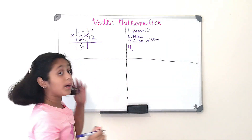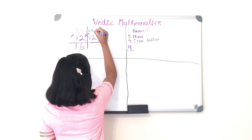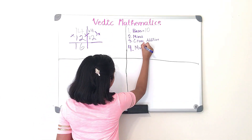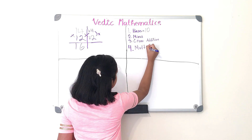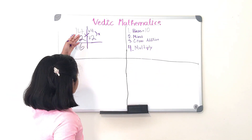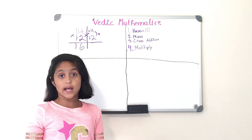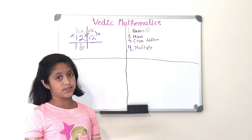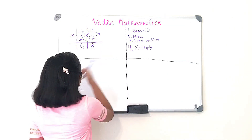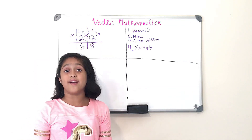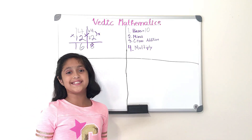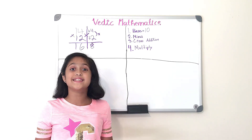Step four is we multiply. We multiply plus 4 times plus 2, and that equals 8. Voilà — you have your answer! 14 times 12 equals 168. Wasn't that simple?